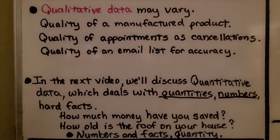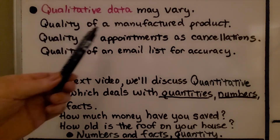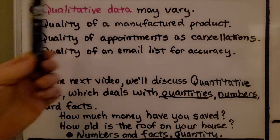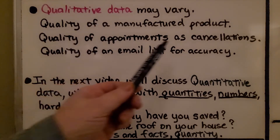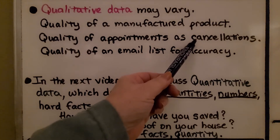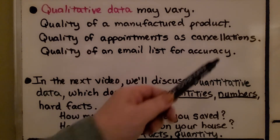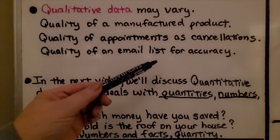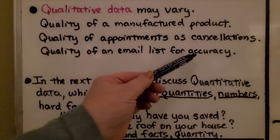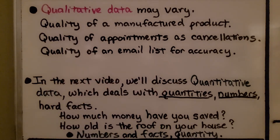For this lesson, we're going to focus on quality. For the quality of a manufactured product: how many have defects? For appointments: how many are actually going to show up compared to how many are cancellations? And for the quality of an email list: how accurate is it — how many emails will come back as wrong addresses?